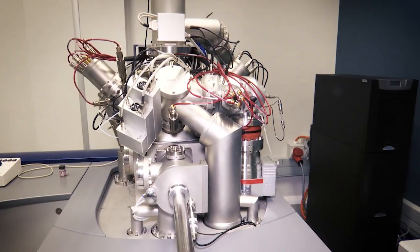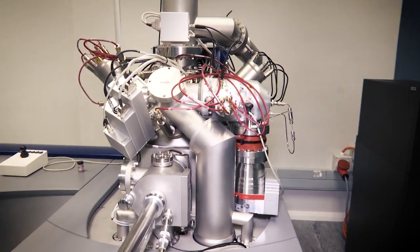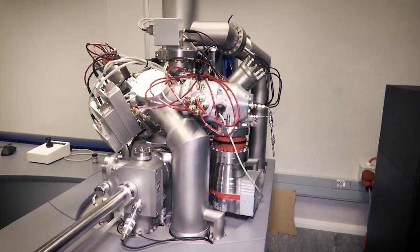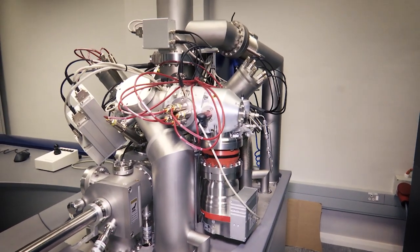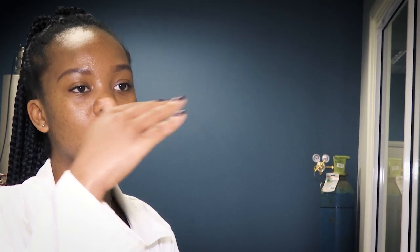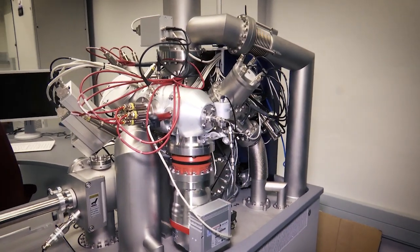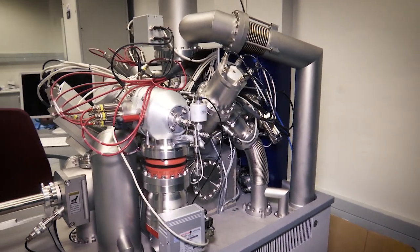This is the machine that we use. It's one of the very few in the world. We use this instrument to look at what the nanomaterials are composed of. You want to look at the layers and what chemicals make up each layer of the nanomaterial that you're using.